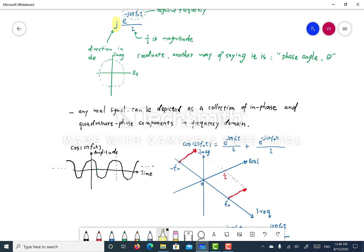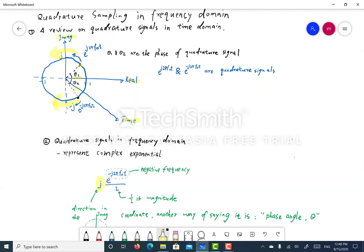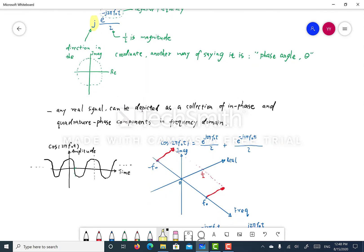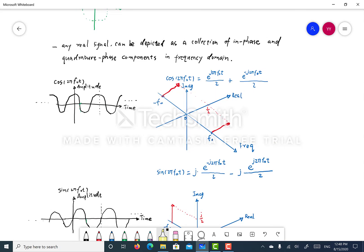So the only difference here in the frequency domain is that we would like to represent this time axis with a frequency one. But we keep the real and imaginary axis unchanged. In fact, in the world of digital communications, we don't really call them real and imaginary, we call them an in-phase and a quadrature phase instead. And you will see why in a second. So any real signal can be depicted as a collection of an in-phase and a quadrature phase component in frequency domain.